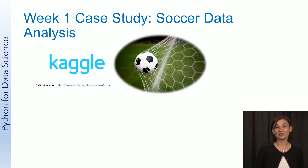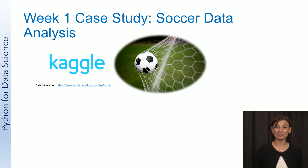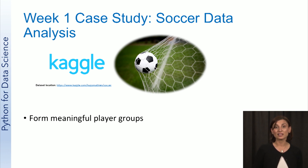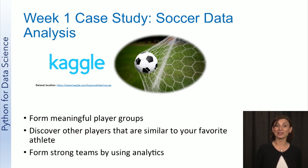This week, we will be using an open data set from the popular site Kaggle. This European soccer database has more than 25,000 matches and more than 10,000 players for European professional soccer seasons from 2008 to 2016. The data set even has attributes on weekly game updates, team lineup, and detailed match events. We will use these data sets to demonstrate the basic steps of the data science process and use the data set for three main goals: form meaningful player groups, discover other players similar to your favorite athlete, and form strong teams by using analytics.